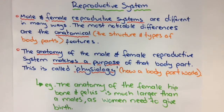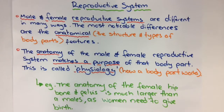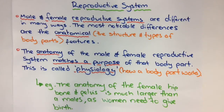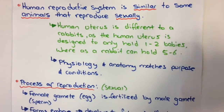So anatomy is how it's made up and physiology is how it works. For example, the anatomy of the female hip and pelvis is much larger than that of a male's, as women need to give birth and require a much larger pelvic cavity for a baby to exit the body, compared to a male's which is more condensed. That's a good way of understanding how anatomy and physiology work together.